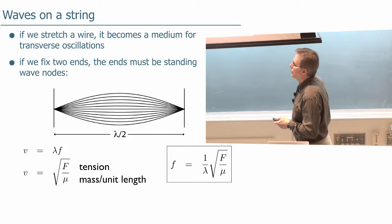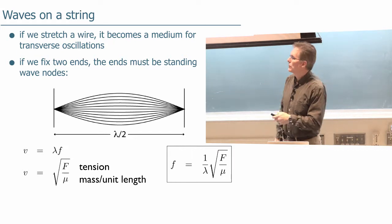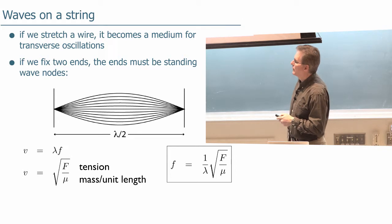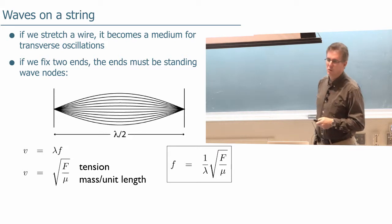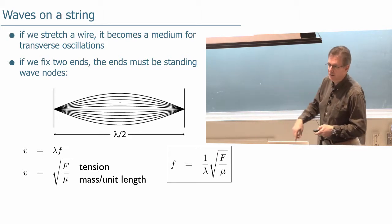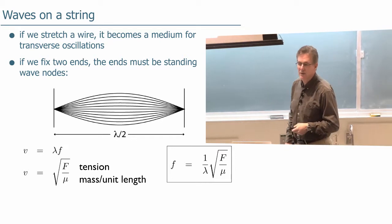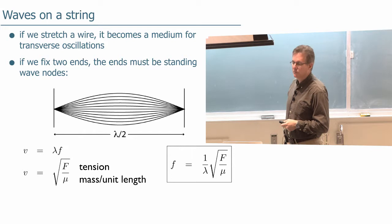Now if we had a long, infinitely long string with a certain tension F in it, and the string has mass per unit length, using more advanced physics we could find that the velocity of waves on that string would be the square root of the tension divided by the mass density, the mass per unit length.